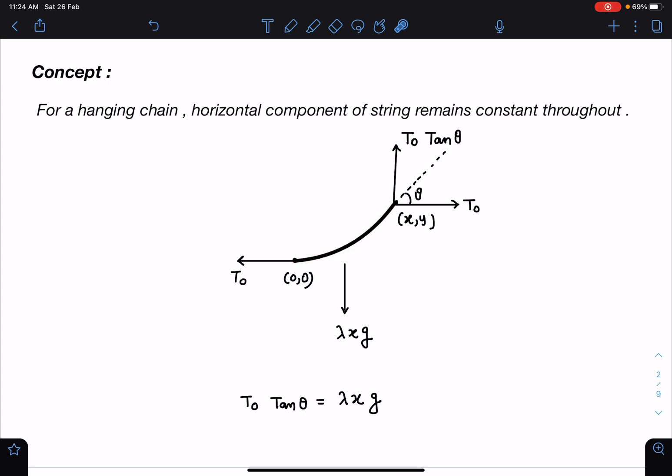Here I can say that the horizontal component of tension is T₀, and here it is T₀. So vertical component of tension will become T₀ tan θ, and this weight is λxg.